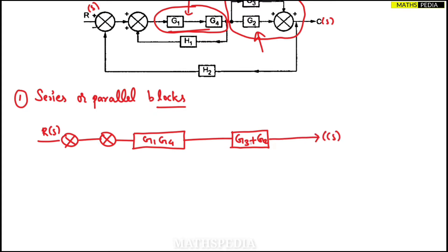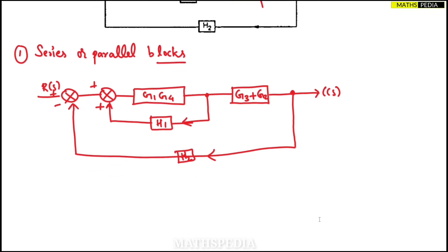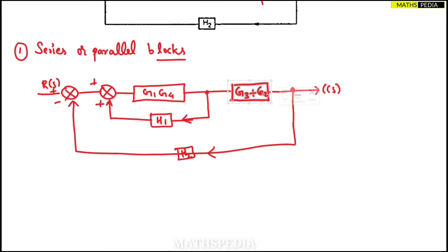C(s) is left out at the output. One feedback loop is already present: H1 is going towards the summing point — be careful with the signs, a plus sign is there. One more feedback loop is coming from the output side towards the summing point, and in between H2 is sitting. This completes the first block reduction step, converting everything to single blocks.